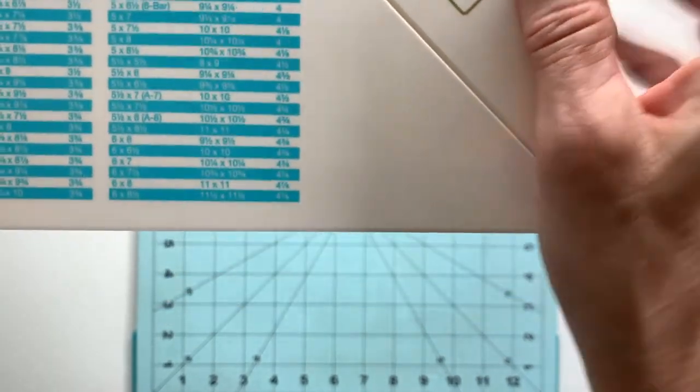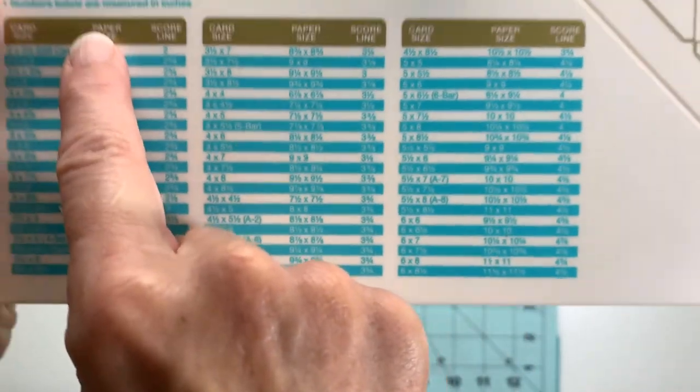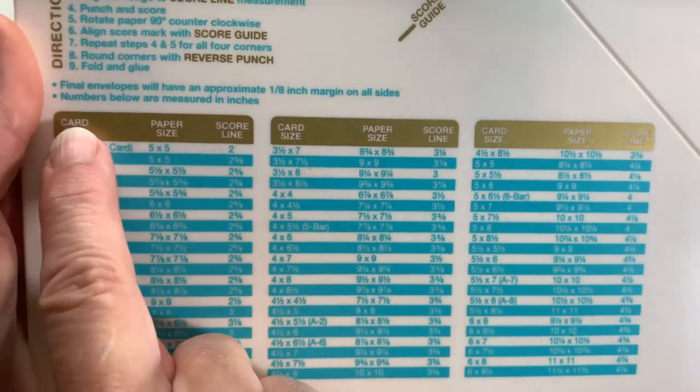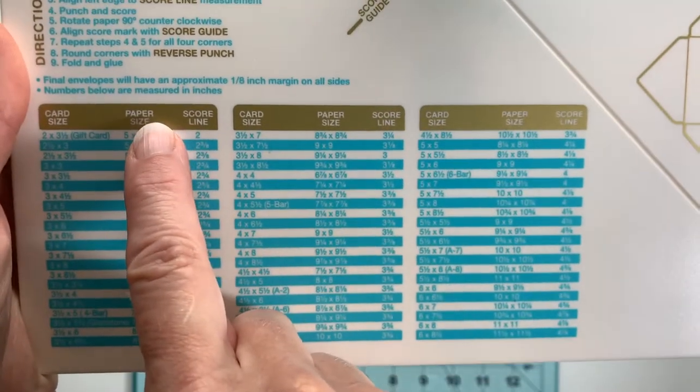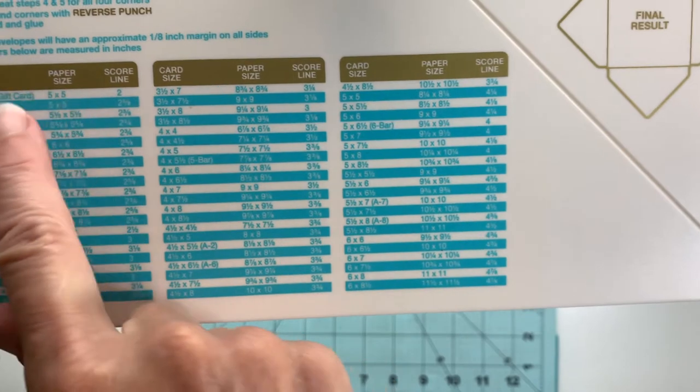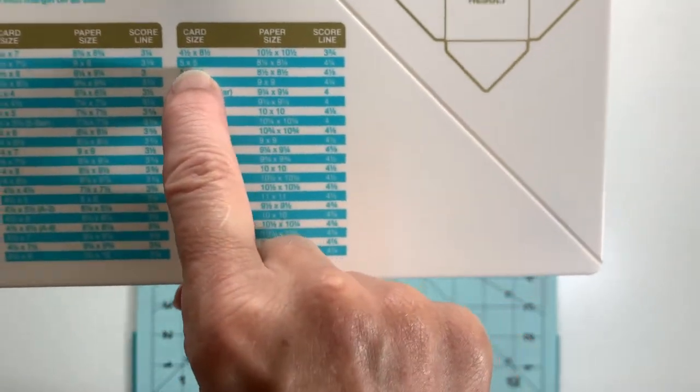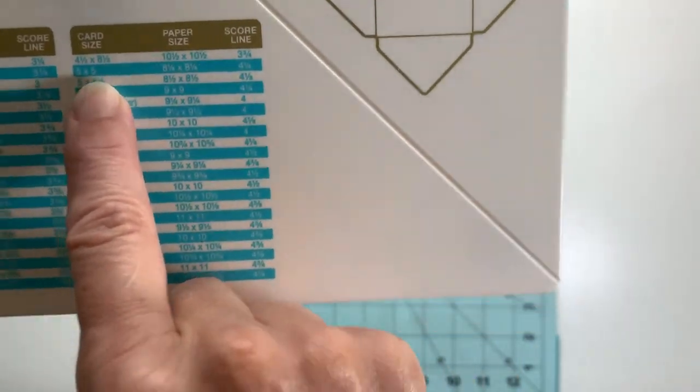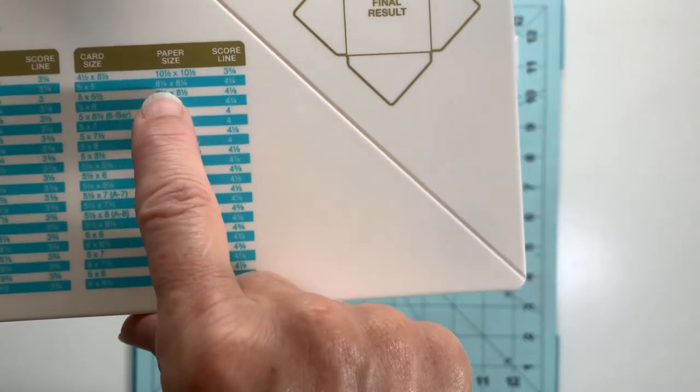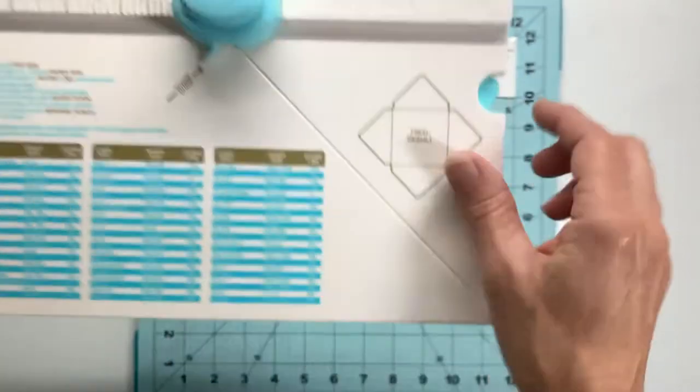For the card size, what paper size you need to start with. Let me focus in a little better here. So I move over here and I can see for a five by five inch card I need to start with eight and a quarter by eight and a quarter inch piece of paper.